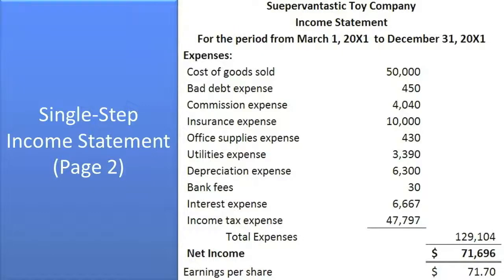The single-step income statement makes no attempt to group revenues and expenses based on operating activities or other activities — they just lump all revenues together and lump all expenses together. Let's move on to the multi-step income statement.